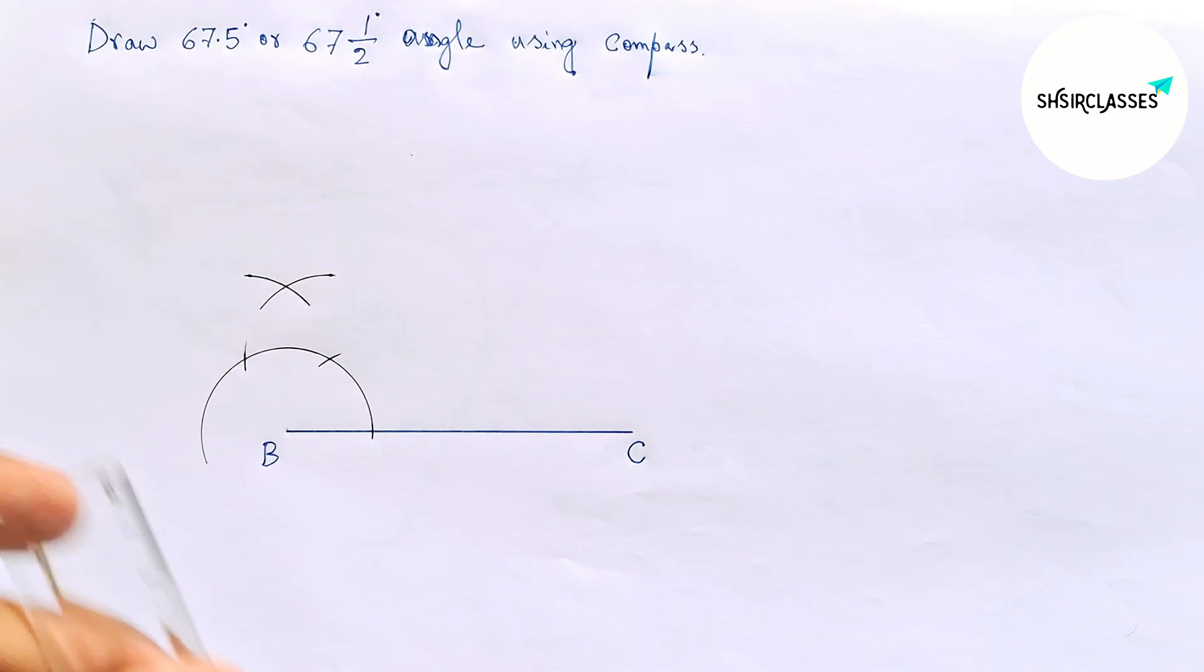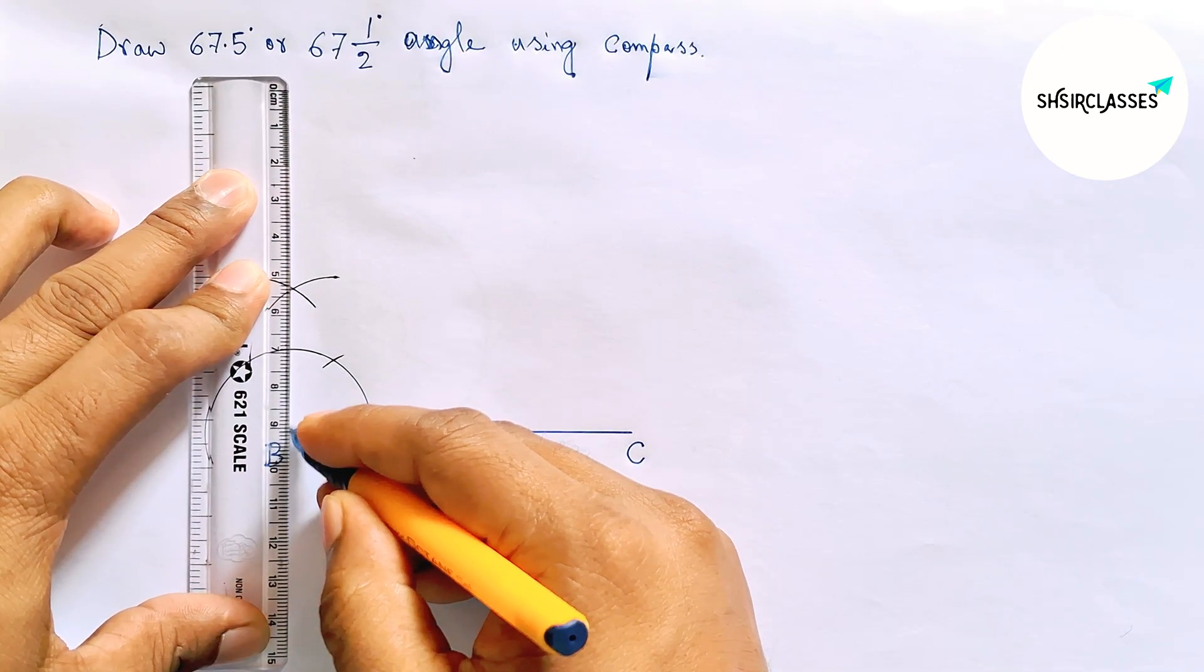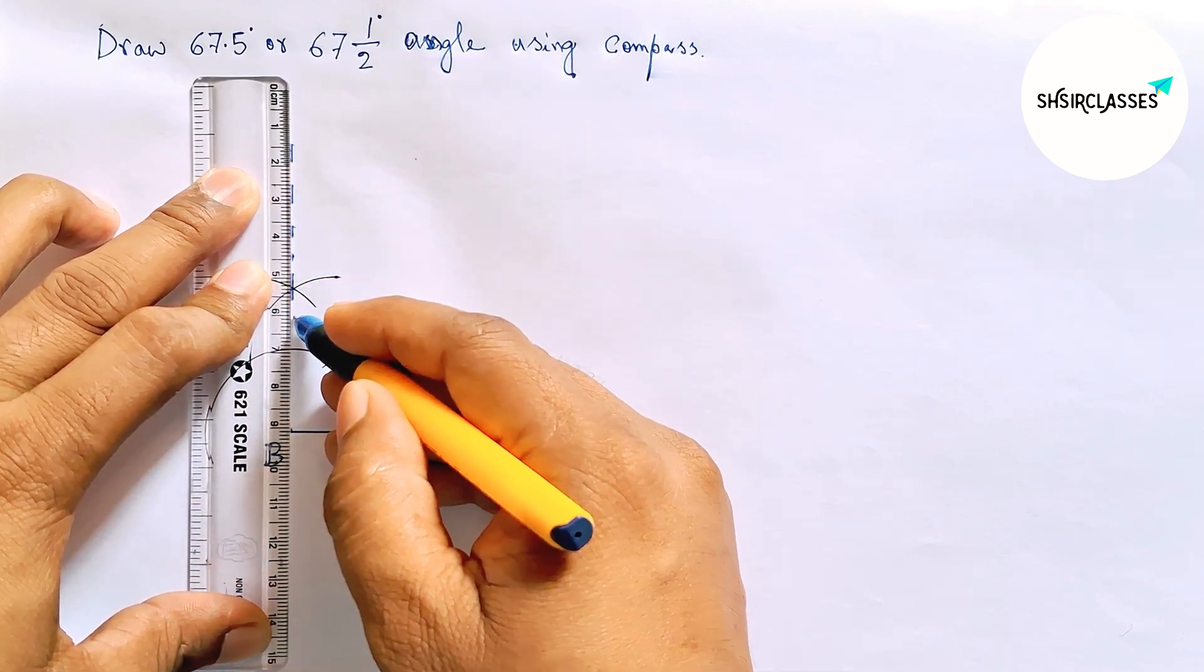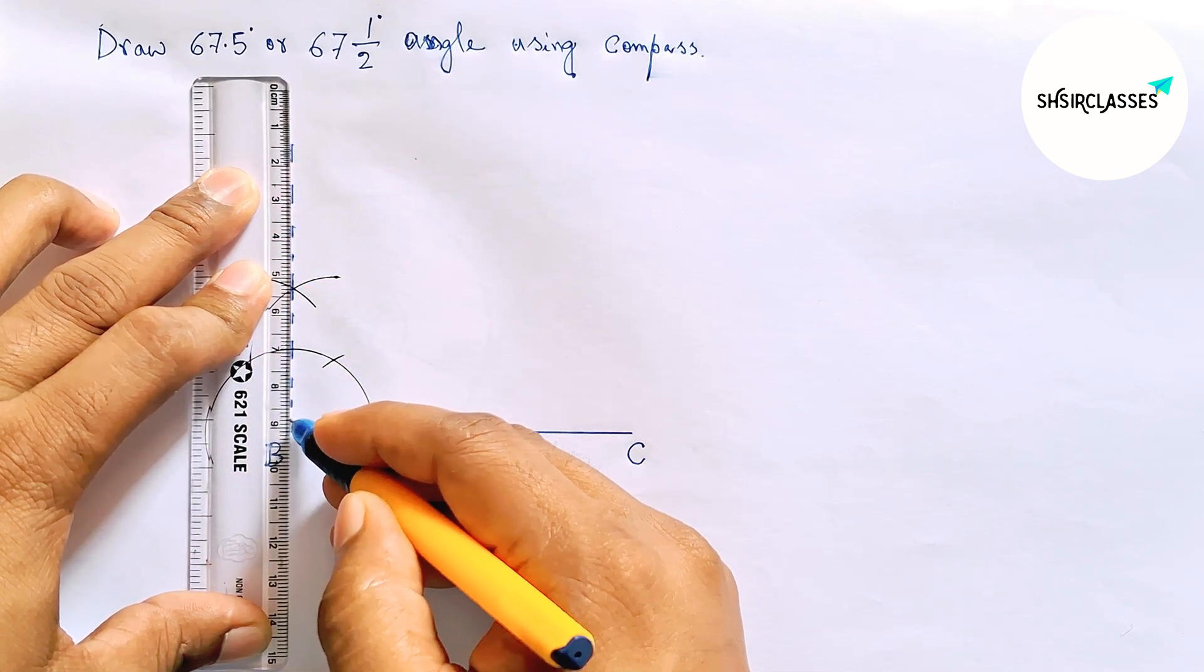Now joining this to get here a 90 degree angle. So joining this line by this way.